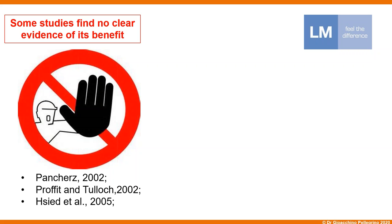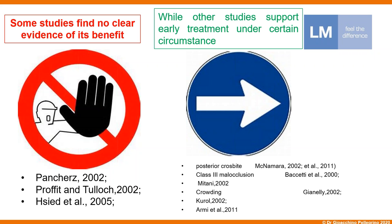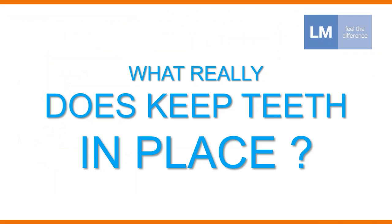If we pay attention to the literature, we can see that some studies say not all malocclusions need to be treated in a very early period of growth. But some other papers say that when we have other kinds of malocclusion or certain aspects within a particular malocclusion, we need to intercept, manage, and avoid the malocclusion worsening. In particular, we have evidence about posterior crossbite, especially with mandibular shift, Class 3 malocclusion, vertical problems, and crowding.